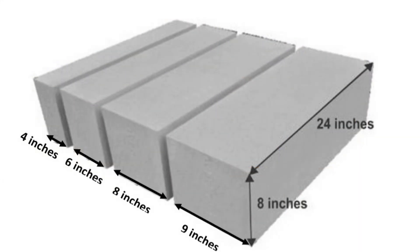AAC blocks are available in different sizes. The height is 8 inches and the length is 24 inches, while different widths are available. The height and length remain the same, and we get different widths: 4 inches, 6 inches, 8 inches, 9 inches, and up to 12 inches.